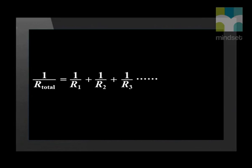If resistors are connected in parallel, the following formula is used to find the total resistance. 1 divided by R total equals 1 divided by R1 plus 1 divided by R2 plus 1 divided by R3, etc.